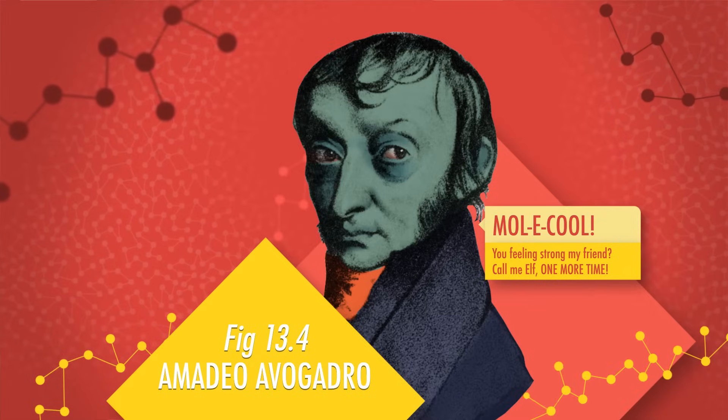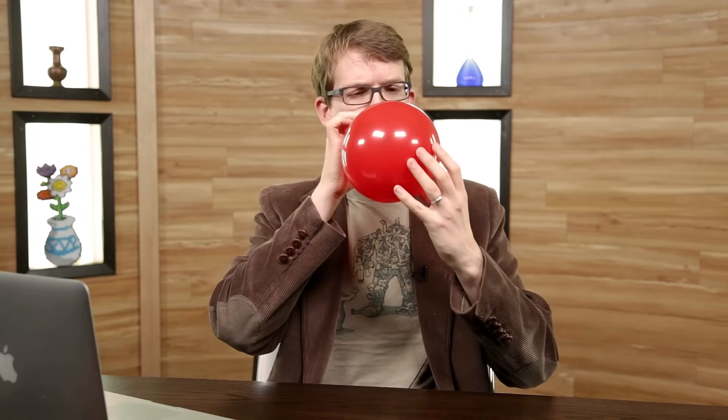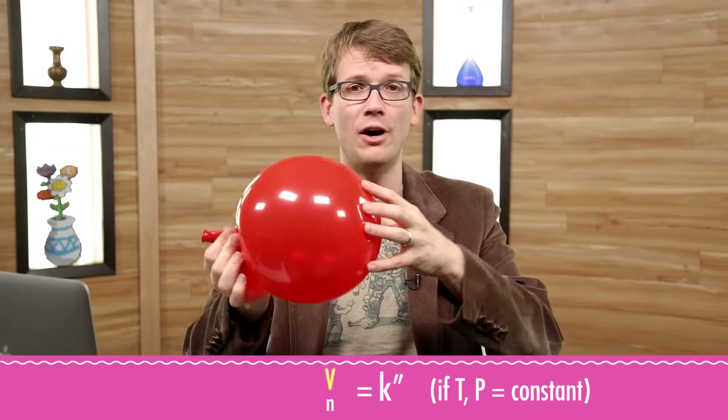And then there's Avogadro's law, discovered by resident house elf Amadeo Avogadro, and this one does not require a closed system. In fact, it's all about changing the amount of gas. Like I just did there. It says that the volume of a gas divided by the amount results in a constant as long as the temperature and pressure are held steady. The more gas you have at a given temperature and pressure, the more space it takes up, and vice versa. That's pretty intuitive, right?